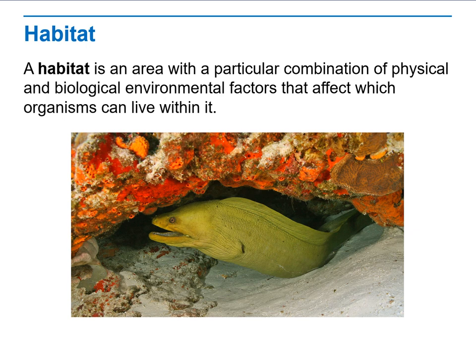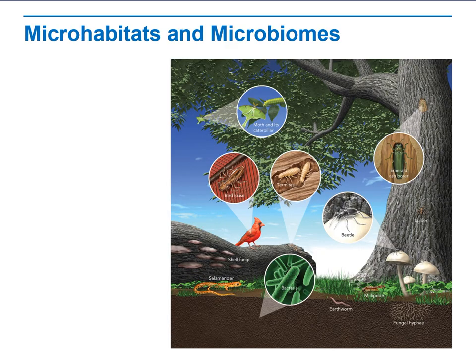Habitat — when we talk about habitat, it is an area with a particular combination of physical and biological environmental factors that affect which organisms can live within it. So it's like talking about home. Microhabitats and microbiomes are types where you can find many different types of animals or microorganisms that work together in a specific relationship, whether they are competitive, mutualistic, or predatory.